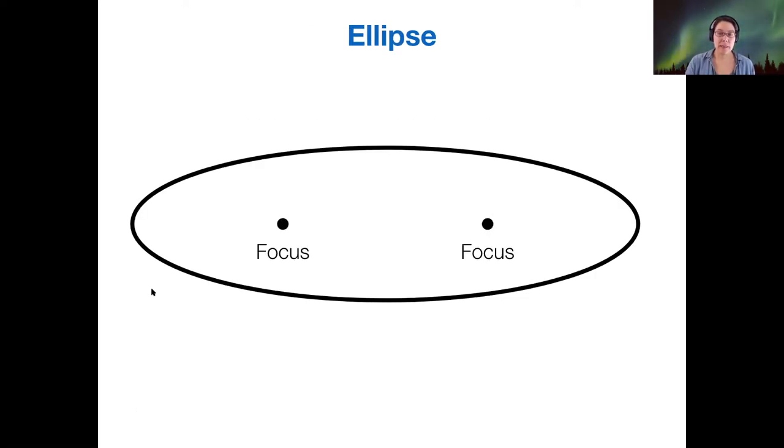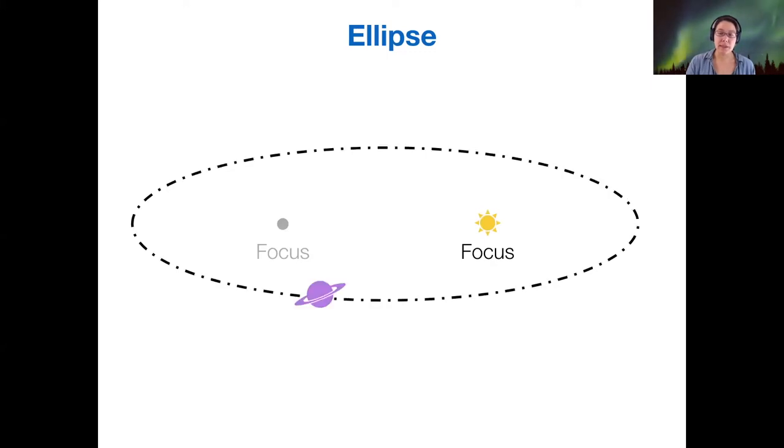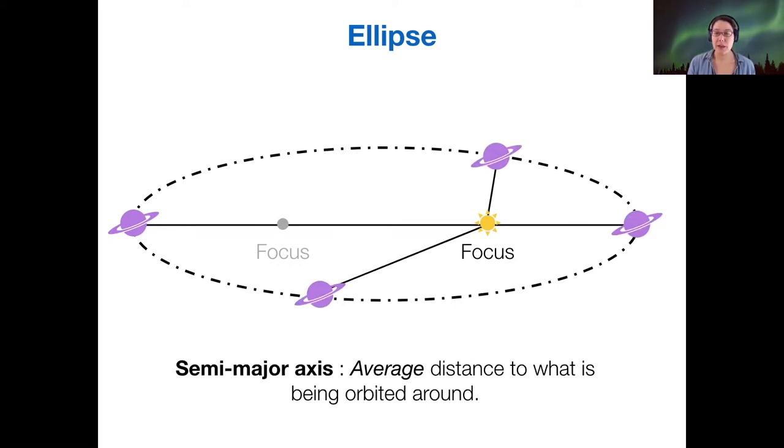When we look at an ellipse, there are two foci. For planets in orbit, the sun is at one focus and the planet is orbiting around the sun. In an elliptical orbit, the planet is actually at different distances at different times in its orbit. So how can we characterize the distance to the star when it's always changing? What we do is use what's called the semi-major axis, which is the average distance to what is being orbited around.